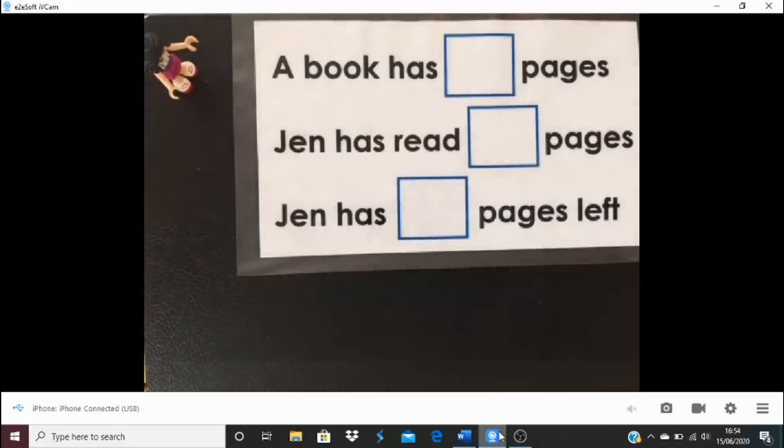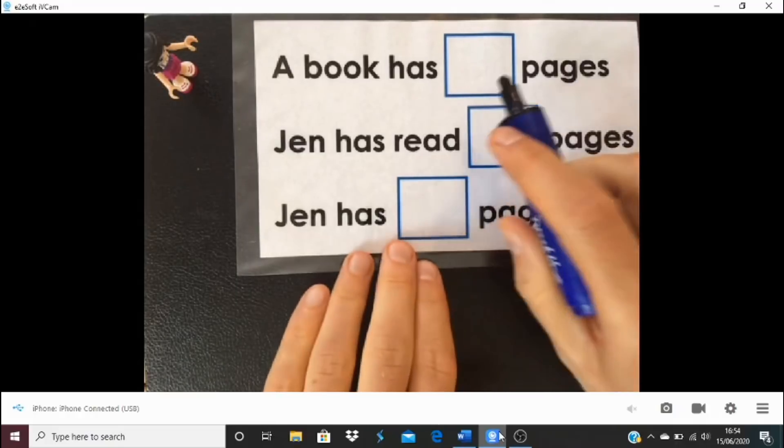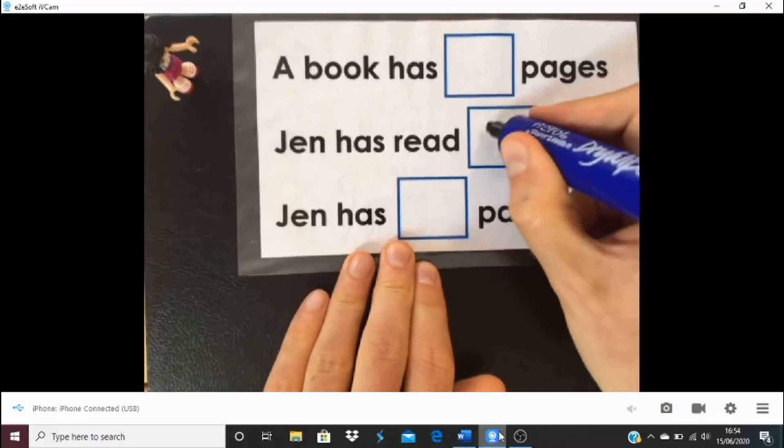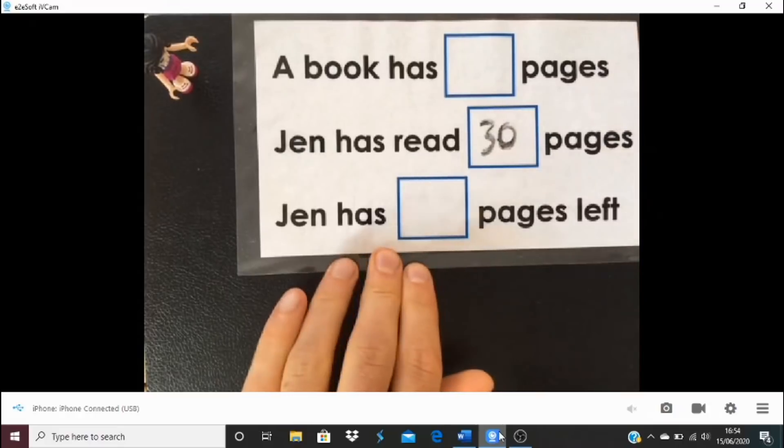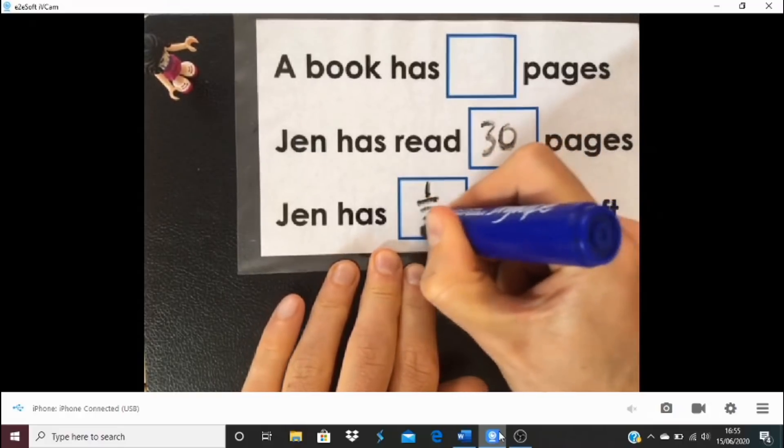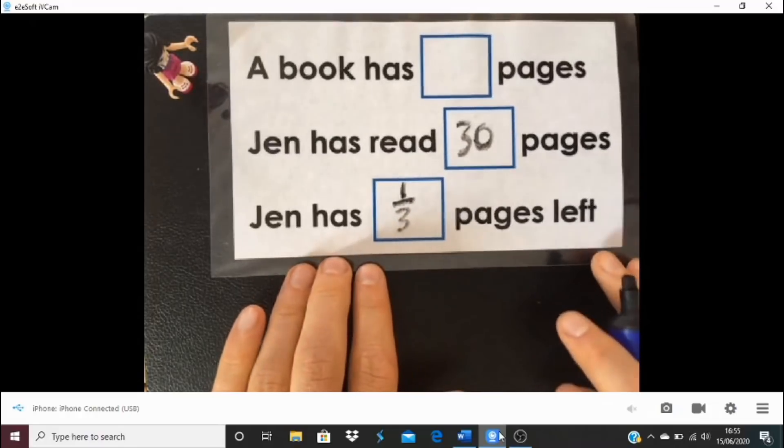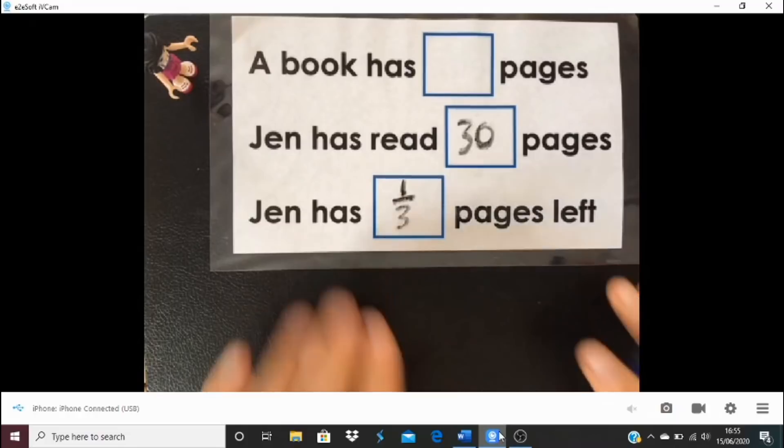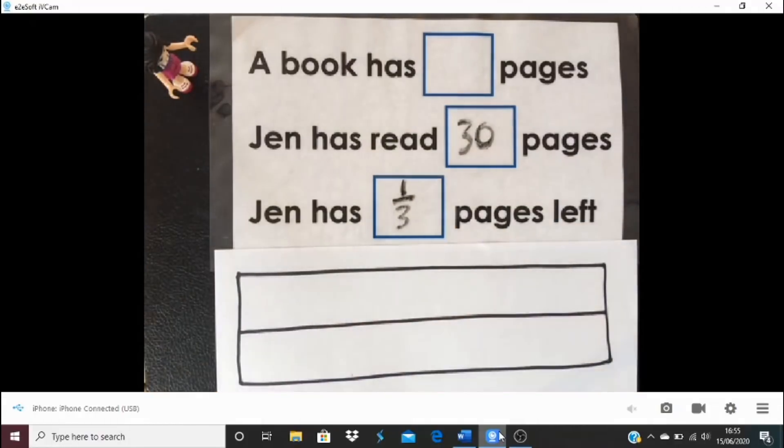Let's see if we can move on slightly from there. A few more examples to have a look at. This time we're not going to know how many pages the book has, but Jen has read 30 pages and she has got one third of the pages of her book left to read. Have a go at this one. Where can you draw the bar model? How many sections will it be split into? Which parts have we been given? I wonder if we're developing some expertise here, and then when you're ready, we'll have a little look.